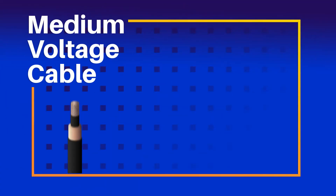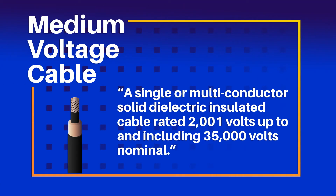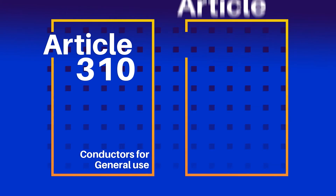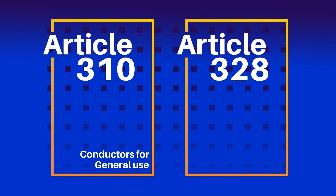Medium voltage cable is defined as a single or multi-conductor solid dielectric insulated cable rated 2001 volts up to and including 35,000 volts nominal. And yet some of the requirements were found in Article 310, conductors for general use, while others were located in Article 328, medium voltage cable.